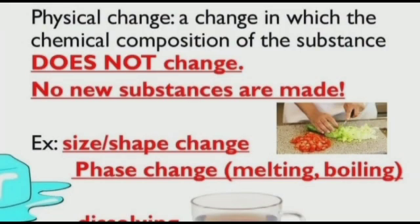A physical change is one in which the chemical composition of a substance does not change and no new substances are made. Examples include changes in size and shape, and phase changes such as melting, boiling, and dissolving.